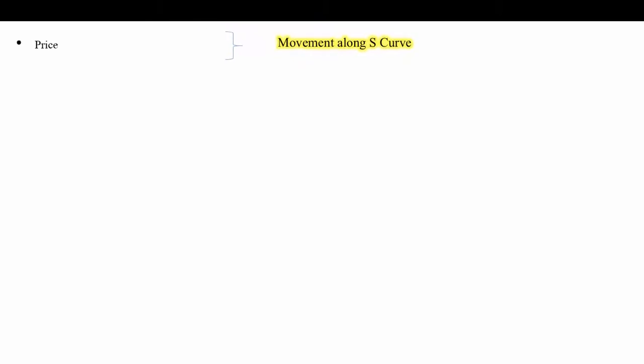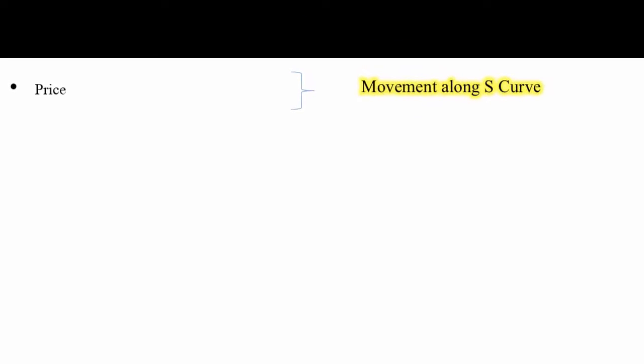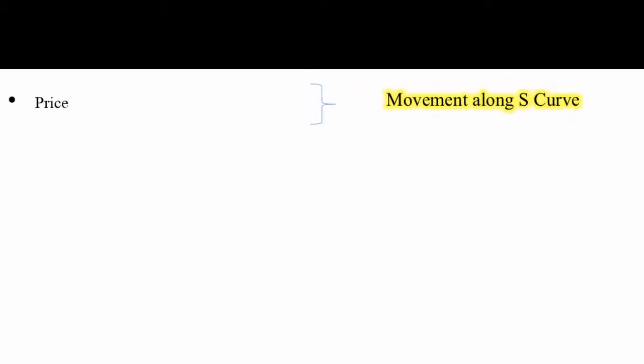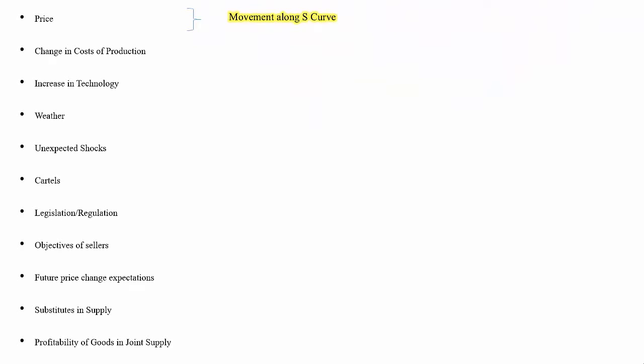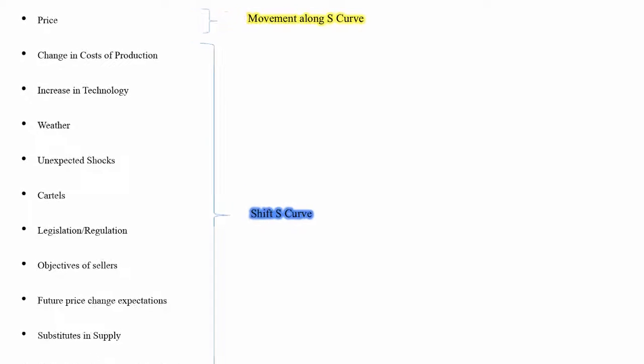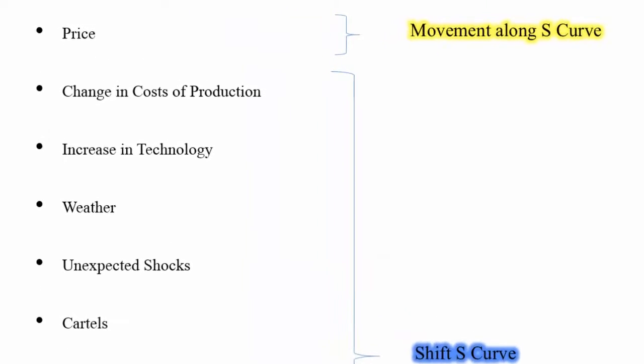Just to recap from the last video, price is a factor that determines supply but a change in price just moves us either up or down along that supply curve. The other factors of supply all cause the supply curve to shift either to the left or to the right if one of them changes.